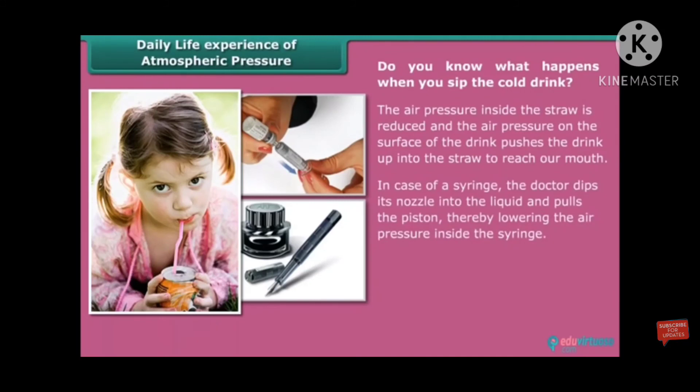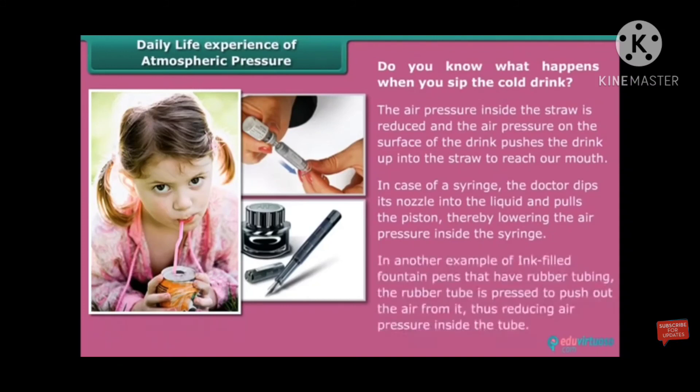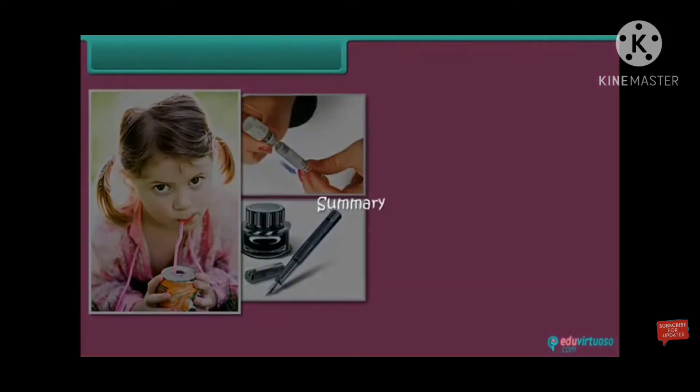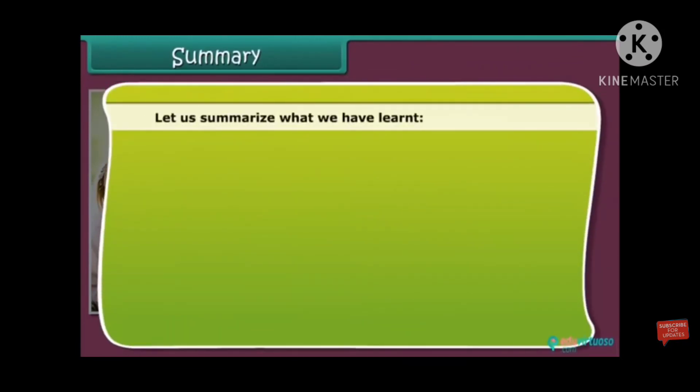In case of syringe also, the doctor dips its nozzle into the liquid and pulls the piston, thereby lowering the air pressure inside the syringe. They will take out the liquid. In another example of ink filler in a fountain pen that has rubber tubing, the air will blow in it and it will automatically fill with the ink. This is all about atmospheric pressure.